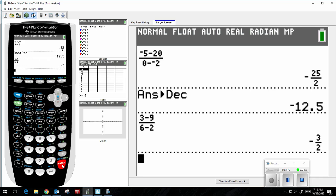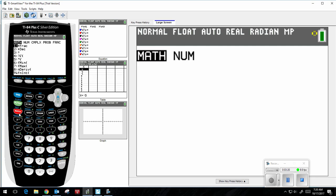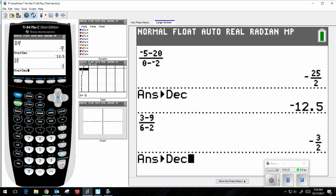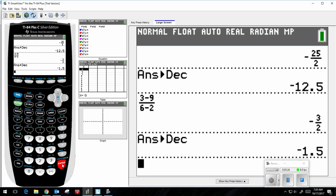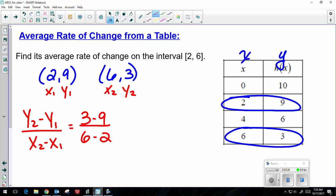So I get negative 3 halves, which is acceptable. But as a reminder, if you want math, go to decimal, and there is your decimal answer. So negative 3 halves or negative 1.5. And that's average rate of change from a table.